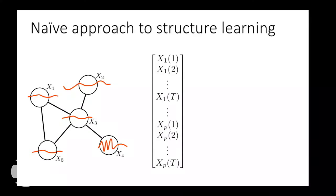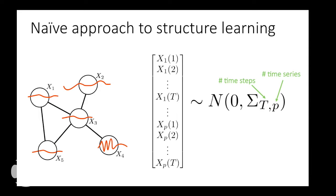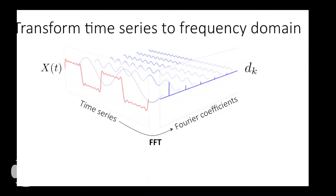How do we learn this structure from data? One approach is to stack up the T time points from each of our p time series into a big vector, which is normally distributed with a big covariance matrix sigma sub TP. You could then do standard Gaussian graphical model structure learning, but each step of the learning algorithm has complexity order T-cubed P-cubed — clearly this doesn't scale well with time. Instead, what's really useful is transforming our data from the time domain into the frequency domain using a fast Fourier transform, and looking at spectral density matrices — the frequency domain analog of lagged covariance matrices.